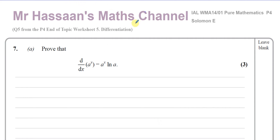Welcome back, this is Mr. Hassan's Maths Channel. I'm answering a question from an end of topic worksheet I gave my students from P4 differentiation — end of topic worksheet number five, question number five, which is also question seven from the Solomon E old C4 collection papers. Part a is asking us to prove that the differential of a to the power of x is equal to a to the power of x times ln a.